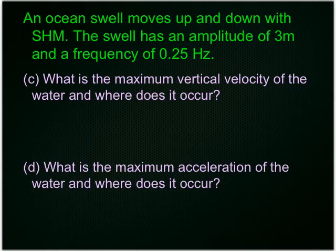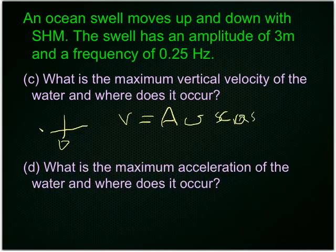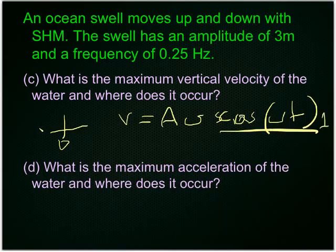What is the maximum vertical velocity of the water, and where does it occur? Well, maximum vertical velocity will be when it's going through the equilibrium position. If you look at the graphs, you'll notice it's a cos graph, so it's when it's going through the equilibrium position. So how do you find it? We know that velocity is equal to A omega cos omega T. The maximum this term can be is 1, so if we make it equal to 1, then velocity is just equal to A omega. So you just put in the amplitude of 3 times your answer to omega.